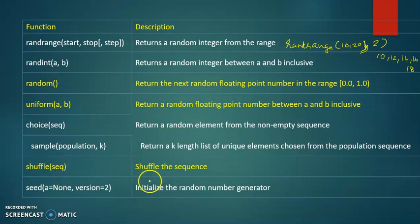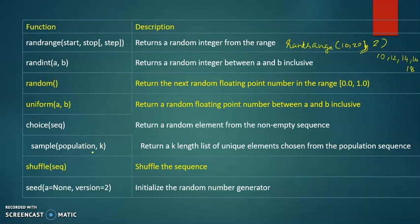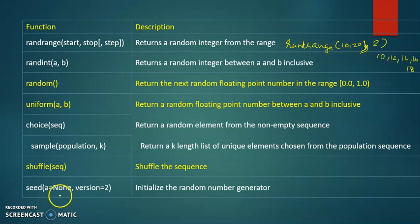The next function is shuffle — it shuffles the elements of a list randomly. The last one is seed, which initializes the random number generator. We can use seed as a number generator so that the next time we run it, we will generate the same number. Using the seed value, we can then create a random number reproducibly.